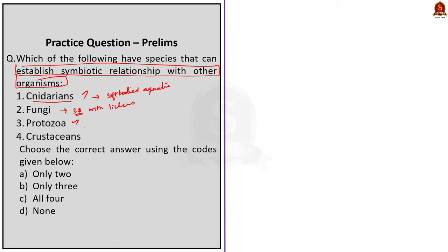Fourth, crustaceans — they can also establish symbiotic relationships. For example, certain species of cleaner shrimp engage in mutualistic relationships with larger organisms by cleaning parasites and debris from their host. All four statements can form symbiotic relationships, so the correct option is option C.